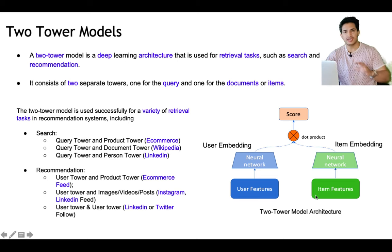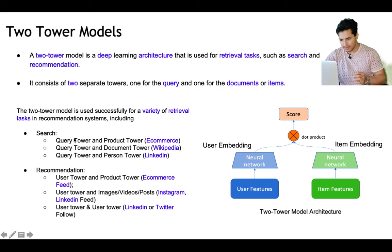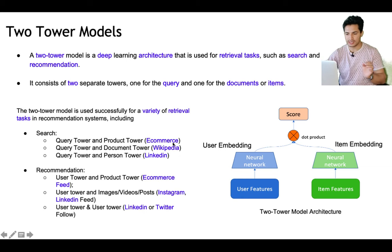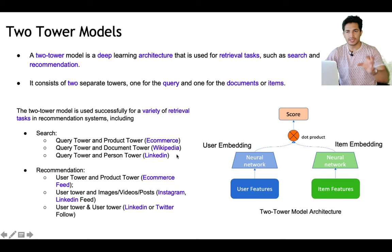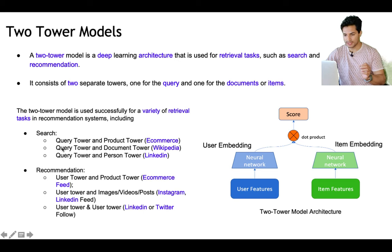The two towers can be generic and represent any two entities. For example, in e-commerce you search for shoes — first tower is the search query, second tower is the item or product. In Wikipedia you type something and get relevant documents — query tower and document tower. In LinkedIn you search for a person and get results — query tower and person tower.